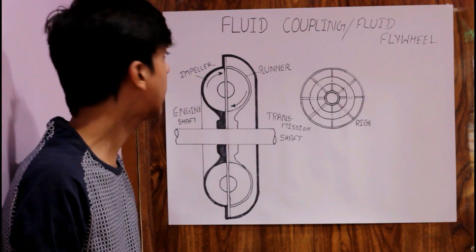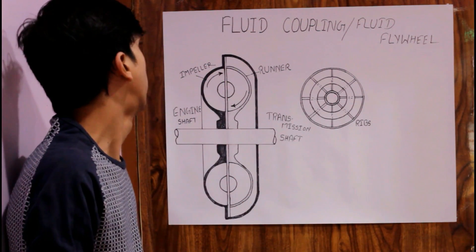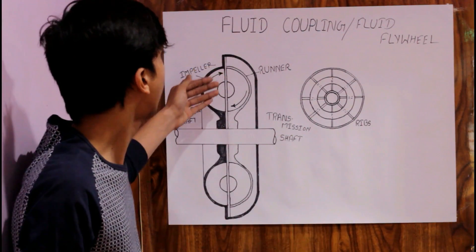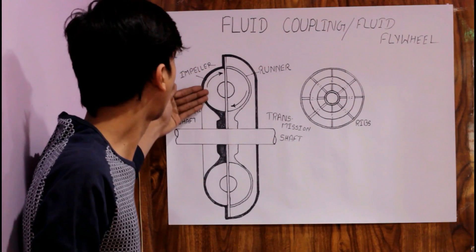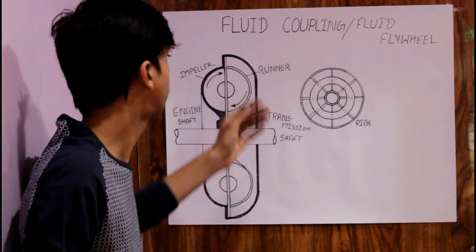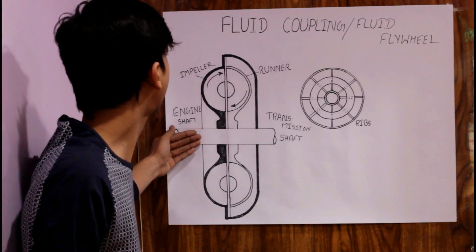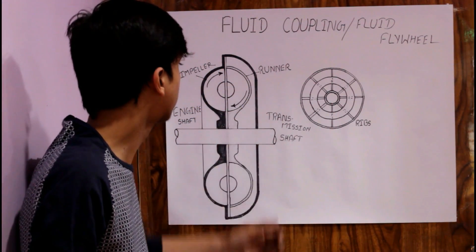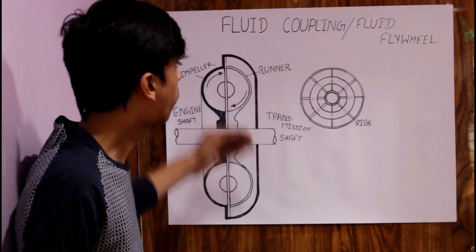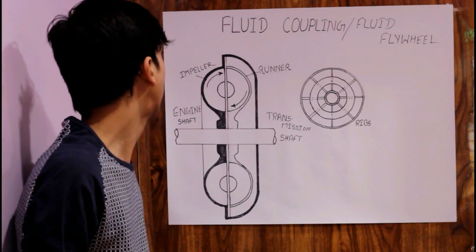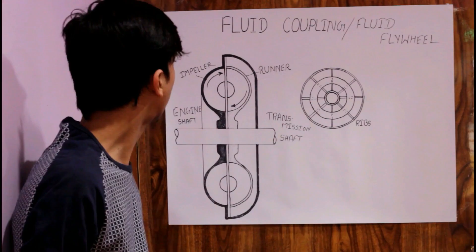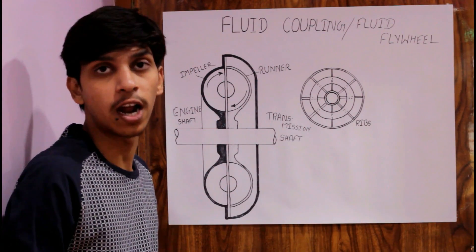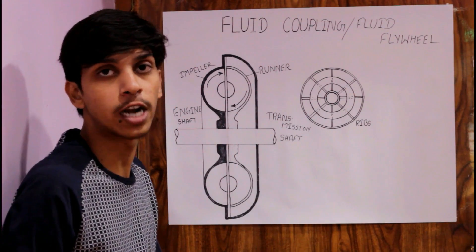The fluid flywheel is based on the principle of fluid coupling. The fluid flywheel basically consists of an impeller and a runner. The impeller is connected with the engine shaft and the runner is coupled with the transmission shaft. The runner is free to move on the transmission shaft, but the impeller is coupled with the engine shaft, meaning when the engine starts, the impeller also starts spinning.